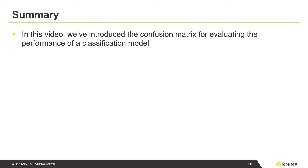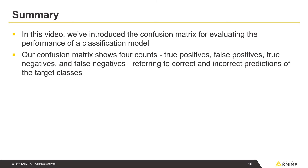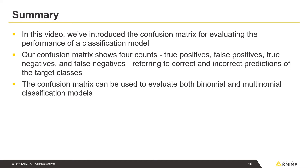In this video, we've introduced the confusion matrix for evaluating the performance of a classification model. The confusion matrix shows four counts: true positives, false positives, true negatives, and false negatives, referring to correct and incorrect predictions of the target classes. The confusion matrix can be used to evaluate both binomial and multinomial classification models.